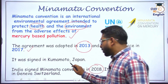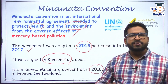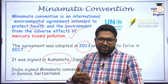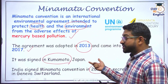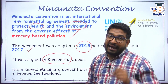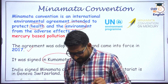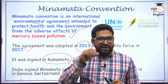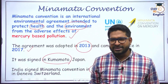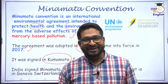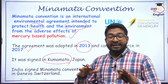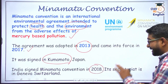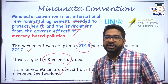The convention was signed in Kumamoto, which is a city and a prefecture in Japan — very similar to a state. Kumamoto comes in the island of Kyushu. However, the headquarters of the Minamata convention is not in Kumamoto or Minamata; it is in Geneva, Switzerland — a very important pointer for MCQs. Minamata itself is a coastal city in Kumamoto prefecture, and the naming is of symbolic importance due to its very sad history connected to mercury poisoning.